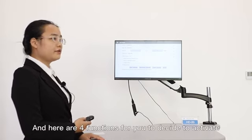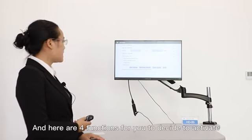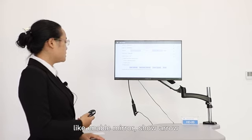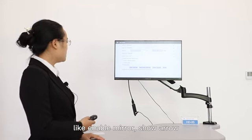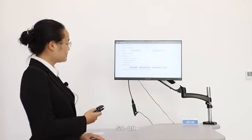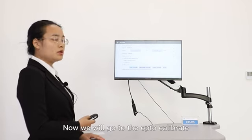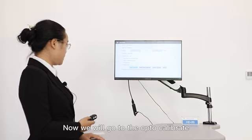And here is four functions for you to design and activate, like enable mirrors, show arrows, and so on. Now we will go to the opto-calibrate.